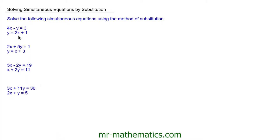Hello and welcome to our lesson on solving simultaneous equations by substitution. In our first question, we have a pair of equations where 4x minus y is equal to 3, and the second equation, y is equal to 2x plus 1. I'm going to write these two equations out again and label them equation 1 and equation 2.